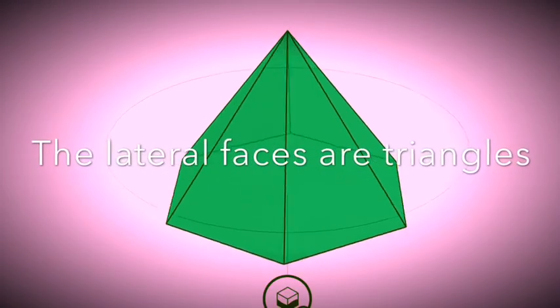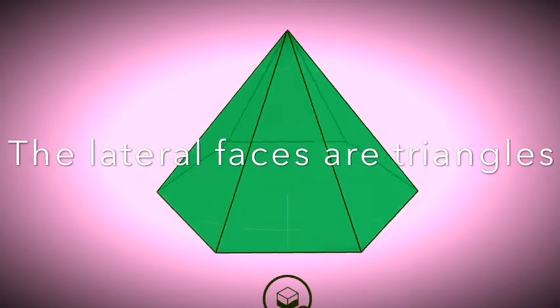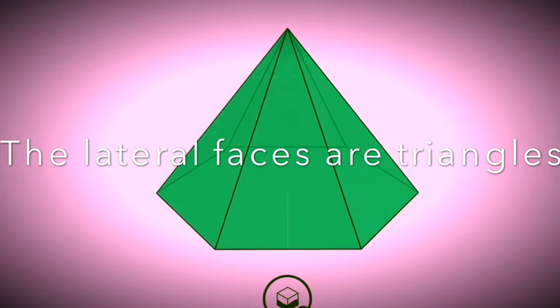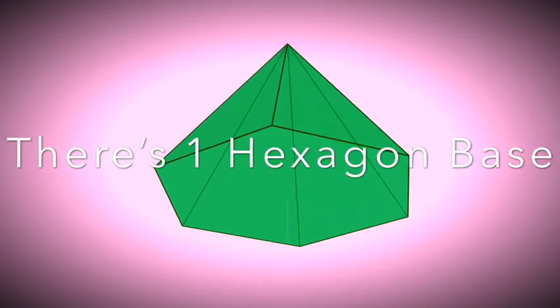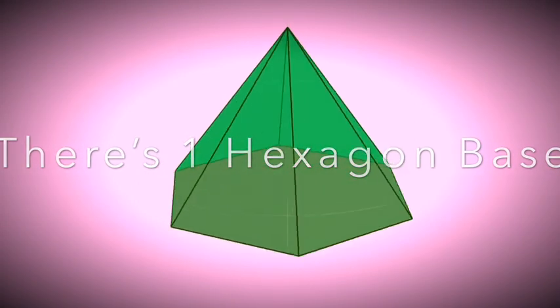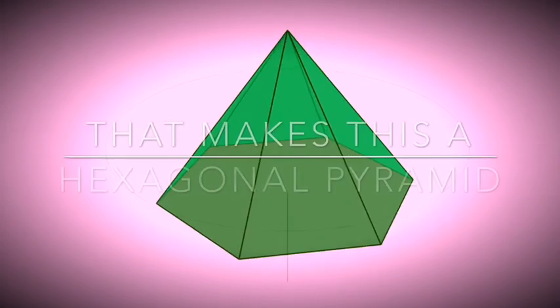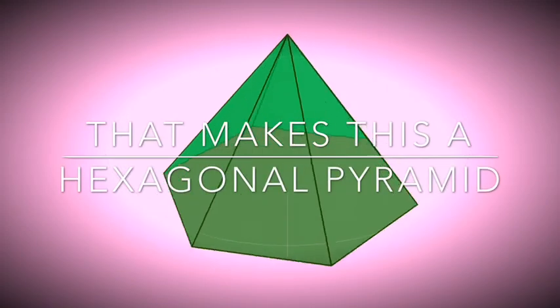And in this last example, there are six lateral faces that are all triangles. The bottom is a hexagon. That would be its base. Therefore, since the base is a hexagon, this would be a hexagonal pyramid.